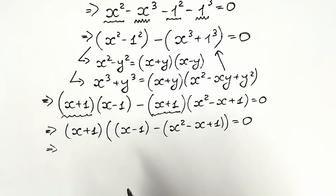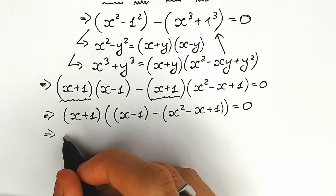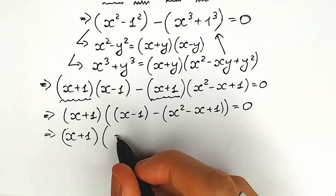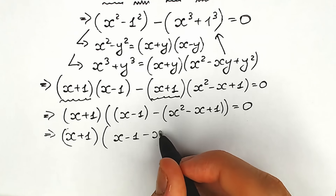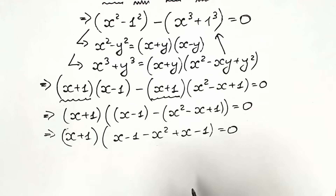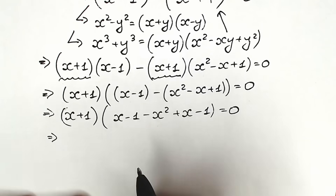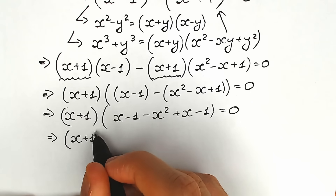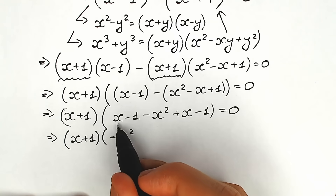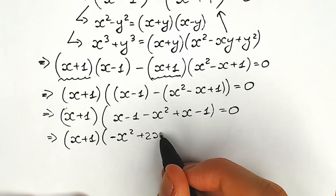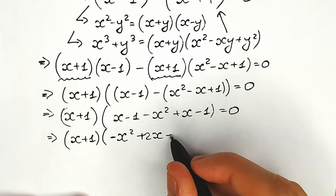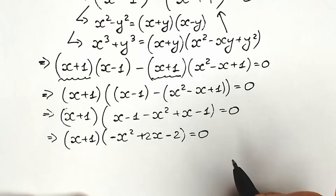Let's simplify the right parenthesis. We have x plus 1 on the left, and on the right side we expand: x minus 1 minus x squared plus x minus 1 equal to 0. Collecting terms: minus x squared, then x plus x gives plus 2x, and minus 1 minus 1 gives minus 2. So we get (x plus 1)(minus x squared plus 2x minus 2) equal to 0.